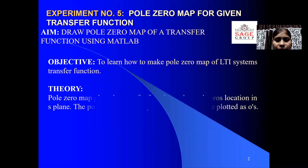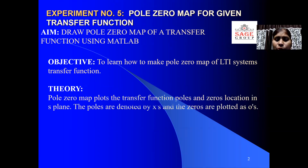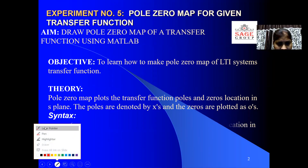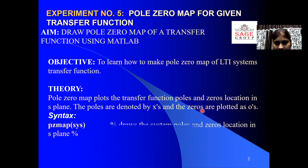Theory. The pole zero map plots the transfer function's poles and zeros locations in the S-plane. The poles are denoted by X and zeros are denoted by O (zero).